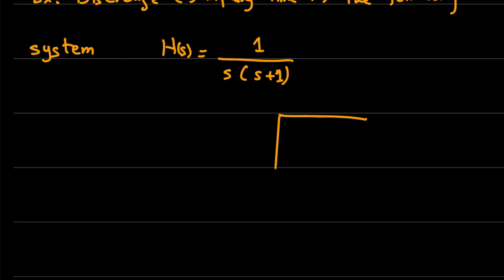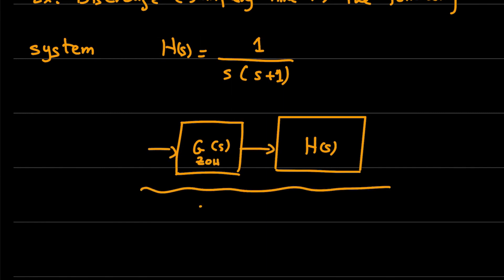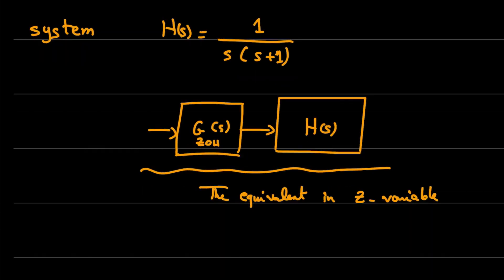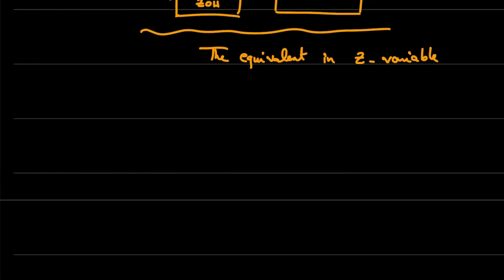So here we have H(s) and here we have the transfer function of zero-order hold, and we want to find the equivalent in discrete time, or the equivalent discrete-time transfer function.